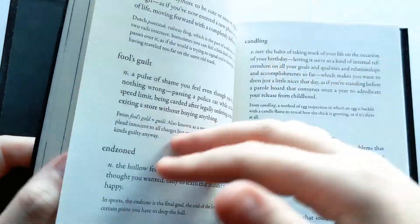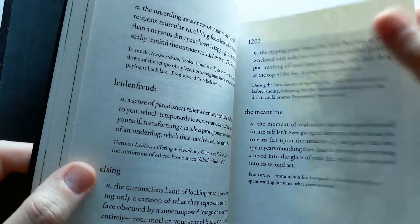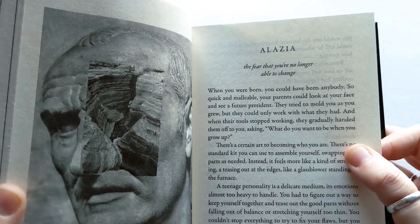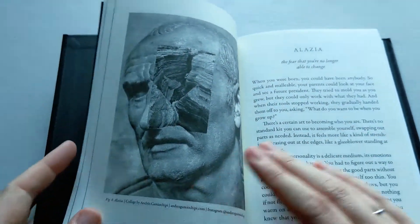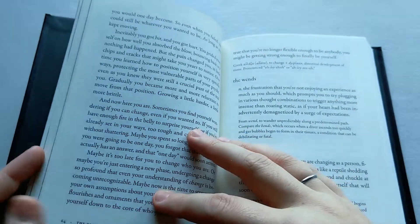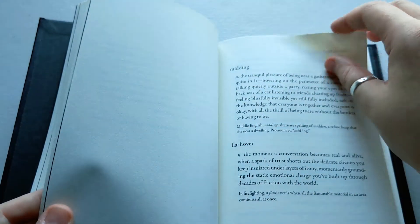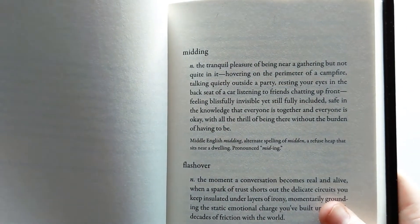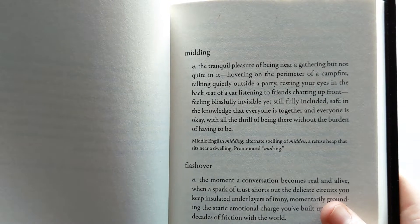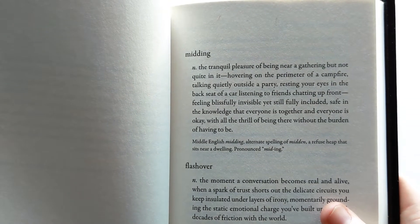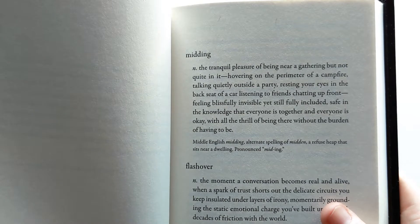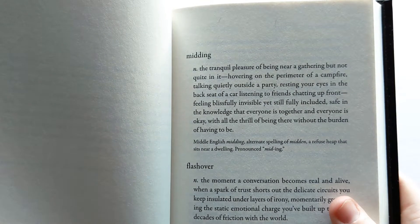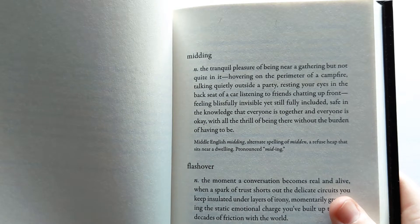It's a really lovely book, truly. One entry captures the fear that you're no longer able to change. Another really nice one is 'adronitis' — the tranquil pleasure of being near a gathering but not quite in it, hovering on the perimeter of a party, resting your eyes in the back seat of a car, listening to friends chatting up front, feeling blissfully invisible yet still fully included, safe in the knowledge that everyone is together and everyone is okay — all the thrill of being there without the burden of having to be.